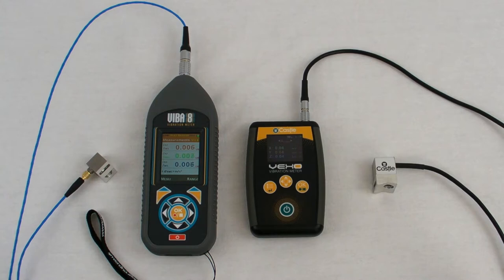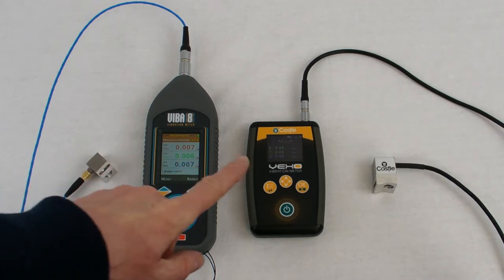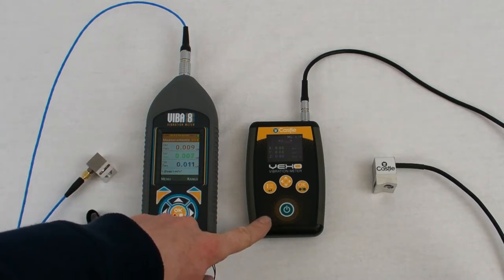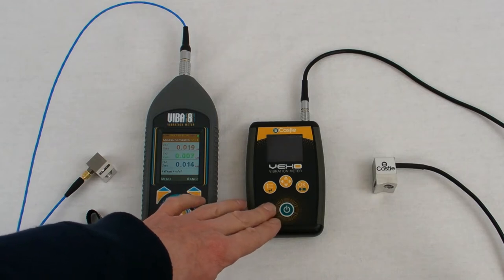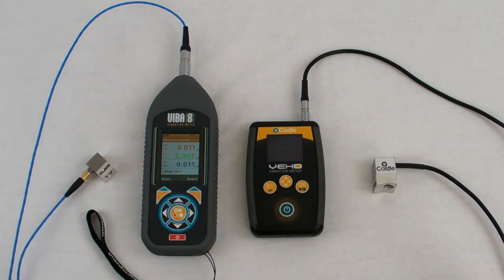Here are a couple of CASEL vibration meters designed for this purpose. This is the CASEL VEXO, which is dedicated to measuring hand-arm vibration. It only has the option of fitting one type of sensor, which means there is nothing to set up before each measurement except the range, making it extremely simple to use.